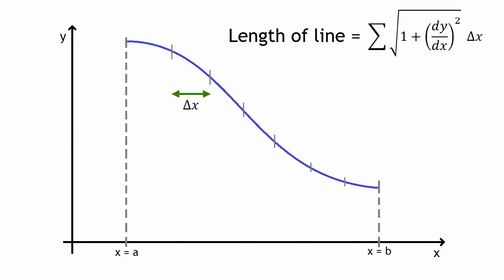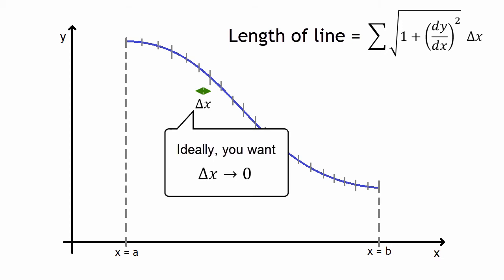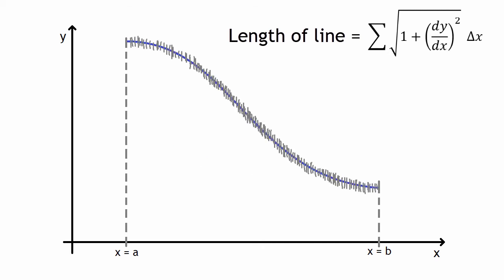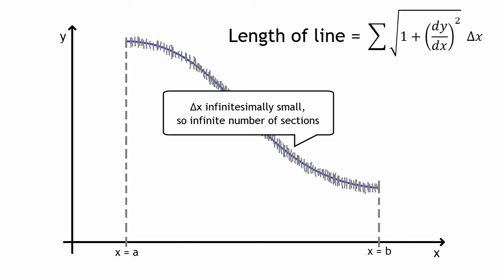Now of course this sum will not be absolutely accurate, but one way that you could make it more accurate is by dividing the lines into smaller and smaller sections. Eventually you want to divide up the sections so that it's infinitesimally small, or in other words, you want delta x to approach zero. When you divide up the lines into infinitesimally small amounts, you'll have an infinite number of sections of the lines, and so now you have an infinite sum.